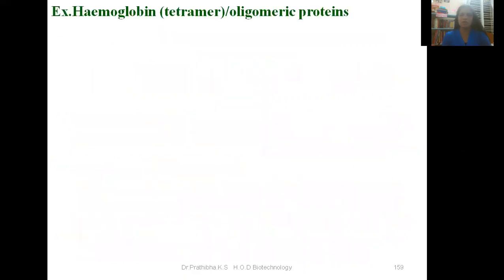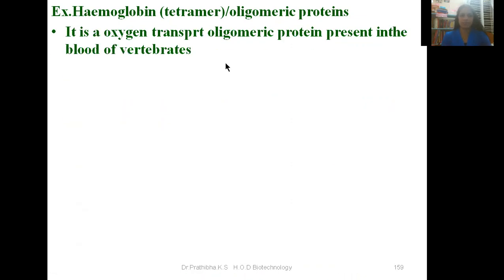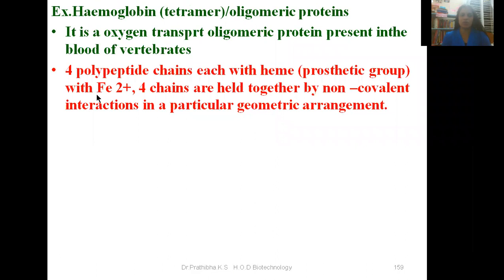For example, hemoglobin is a tetramer where you can see the presence of four polypeptide chains, and is also known as an oligomeric protein. It is the oxygen transport oligomeric protein present in the blood of vertebrates. In hemoglobin, you can see the presence of four polypeptide chains, each with heme — a prosthetic group, which is the non-protein part of the protein — with ferrous Fe²⁺, and the four chains are held together by non-covalent interactions in a particular geometric arrangement.